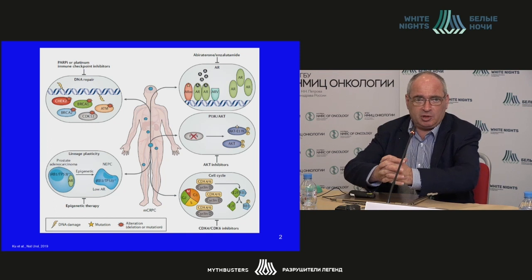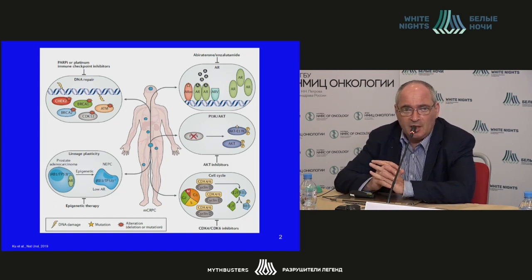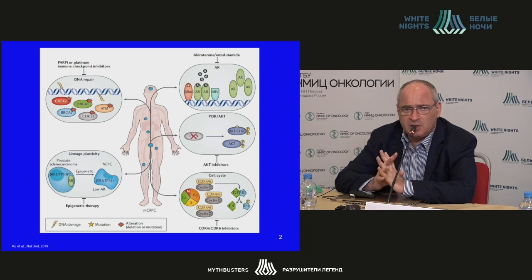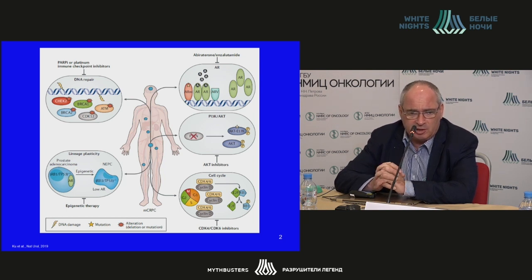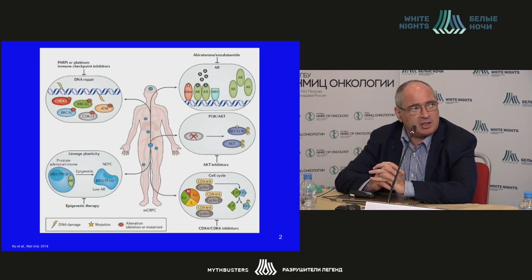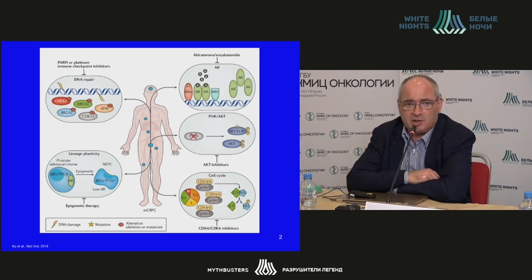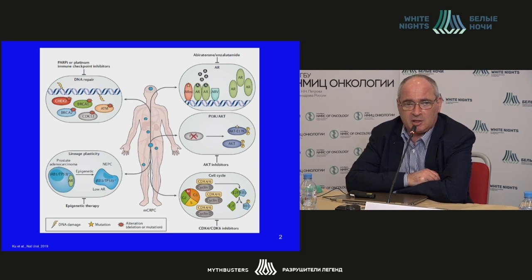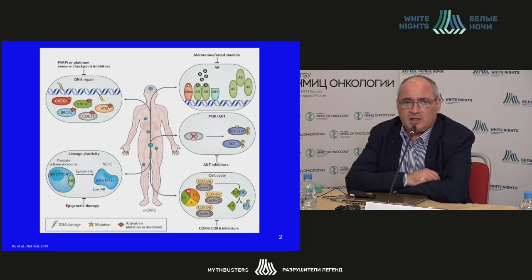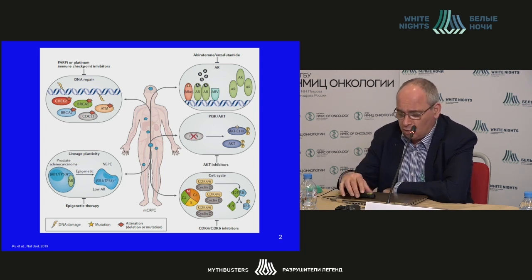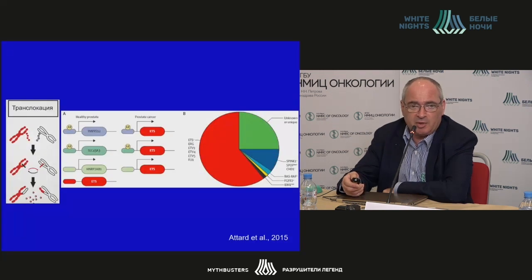That is a very good slide demonstrating the modules that we are going to discuss today. The most significant module at present is a new module — disturbance of the process of DNA reparation and genome stability. We have some drugs that have altered the treatment of these patients. Androgen receptor signaling cascade remains the key thing when we speak about the pathogeny of prostate cancer. PI3-kinase is a separate signal module, along with regulation of the cellular cycle.